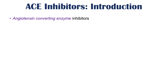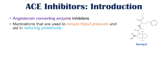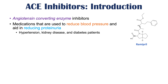ACE inhibitors, or angiotensin-converting enzyme inhibitors, are medications used to reduce blood pressure and aid in reducing proteinuria. They have some other functions as well, including effects on heart health, and can be used in a variety of patient populations including hypertension patients, kidney disease patients, diabetes patients, and heart failure patients.